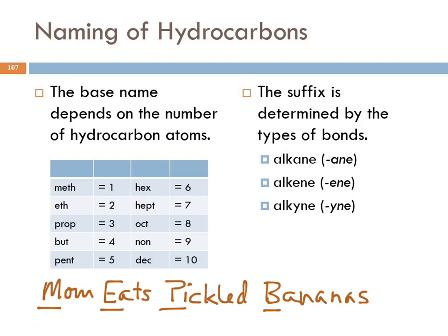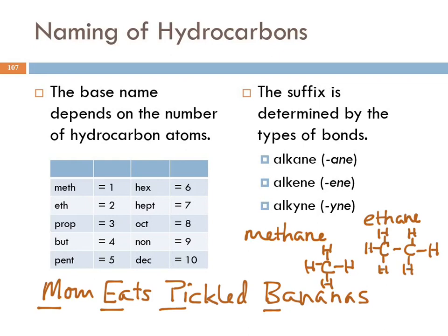And so methane has one carbon and just all single bonds. So that's methane. Ethane has two carbons. And so the carbons will be bonded to each other. And then the carbons are always going to form four bonds. And so it's just going to get filled in with hydrogens around the edges.